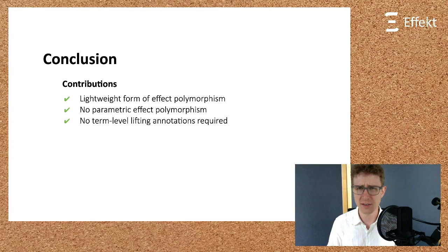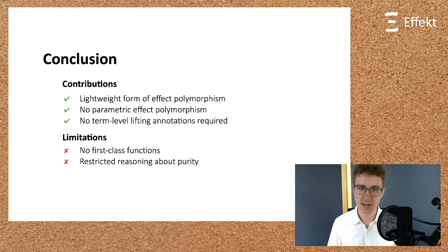I hope that I convinced you that Effekt offers an interesting lightweight form of effect polymorphism. Parametric effect polymorphism simply does not exist in the language. We also have seen that effect annotations influence the operational semantics. In particular, other than in languages like Frank, it is not necessary to adapt computation using term-level lifts. This simplicity comes with trade-offs. At the moment, we do not support first-class functions, and reasoning about purity is restricted. An empty effect set does not imply that a function is indeed pure. It just implies that we as the caller cannot handle any effects.